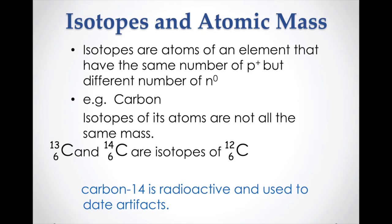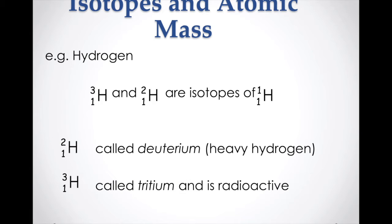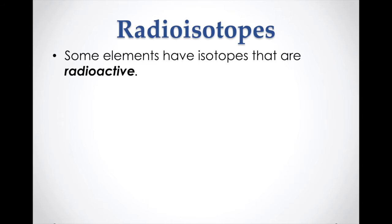Carbon-14 is actually radioactive, and it's the element often used to date archaeological artifacts. Hydrogen also has isotopes: hydrogen-1 is the regular one you're most familiar with; hydrogen-2 has an extra neutron and is called deuterium or heavy hydrogen; and hydrogen-3 is called tritium, which is radioactive and will decay. These radioactive isotopes are sometimes just known as radioisotopes.